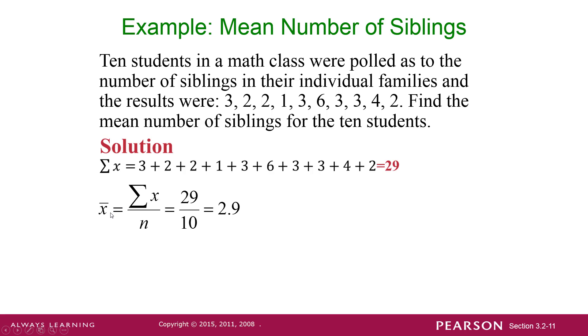So to get x̄, the mean, we were going to add up the data values and divide by n. So 29 over 10 is 2.9. This is the average or mean number of siblings in that data set. So we talked about that last time.